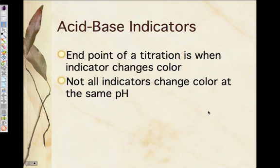So the end point of a titration is when the indicator changes color. Not all indicators change color at the same pH. Some go from green to yellow, some change blue to pink. So there's different color changes that can occur at different pHs. If you're looking at a solution that is reacted and it gets to equivalence point at something below 7, you probably don't want to use phenolphthalein because that would not give you the correct end point.